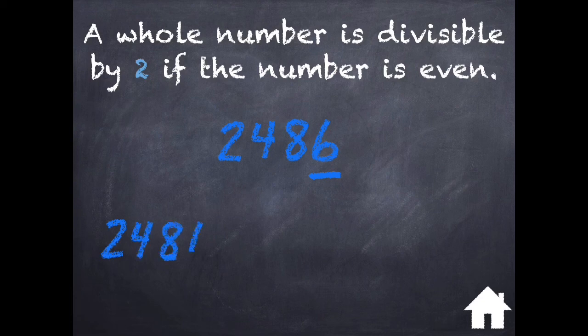So we know it is divisible by 2. If we take 2486 and divide it by 2, we get 1243.